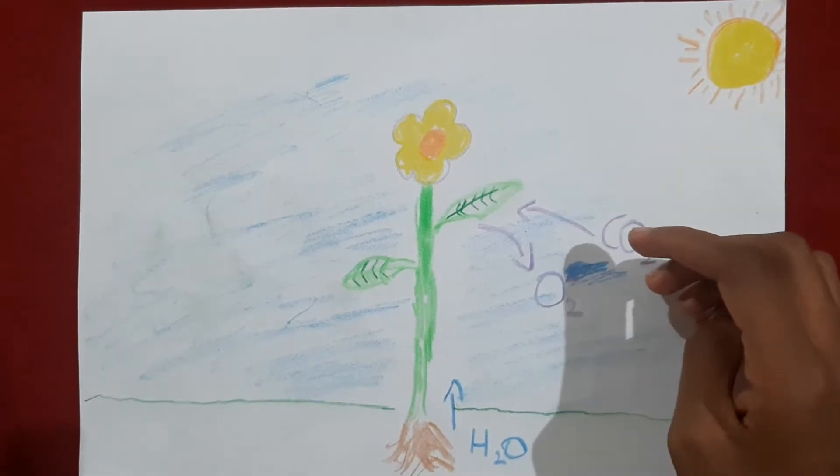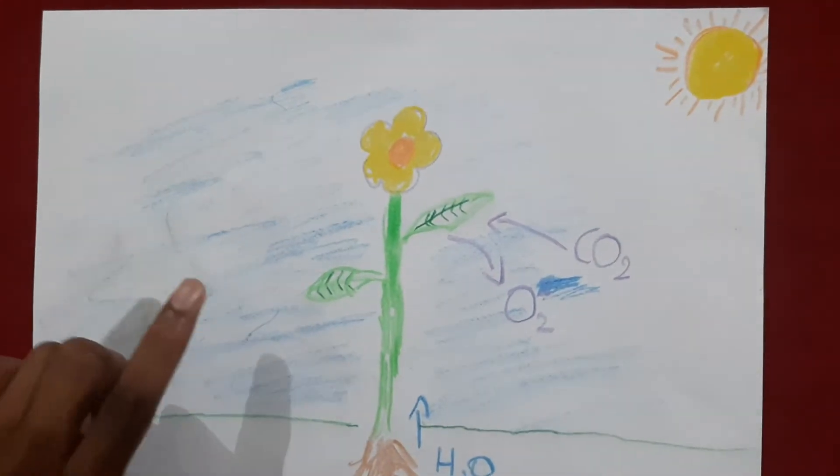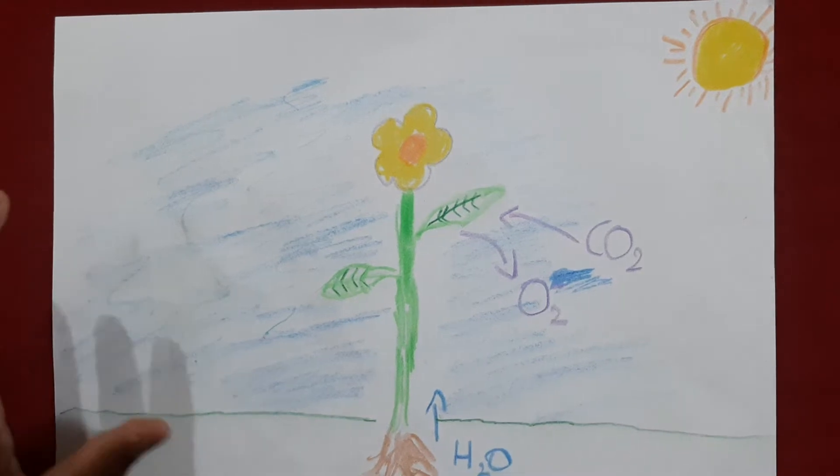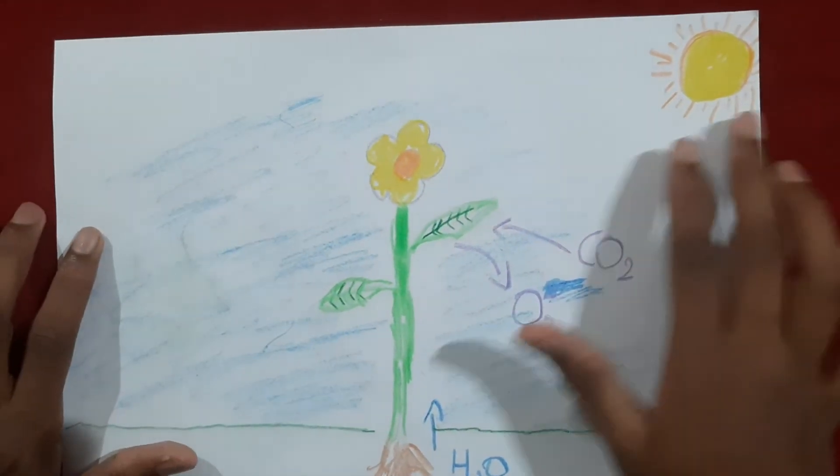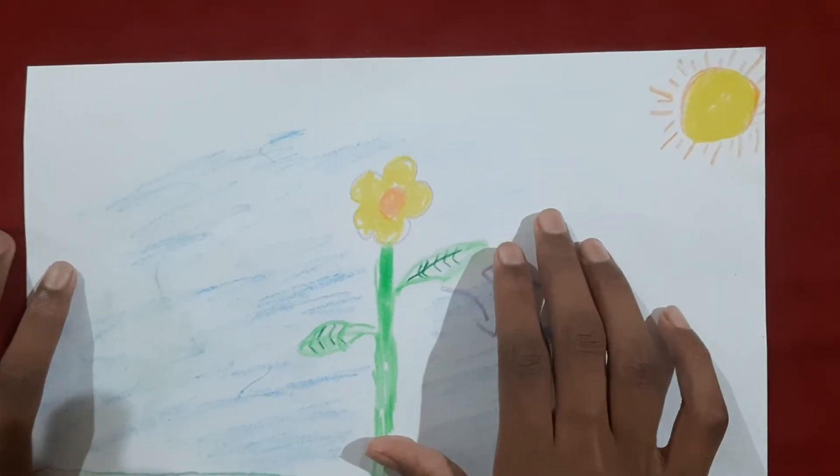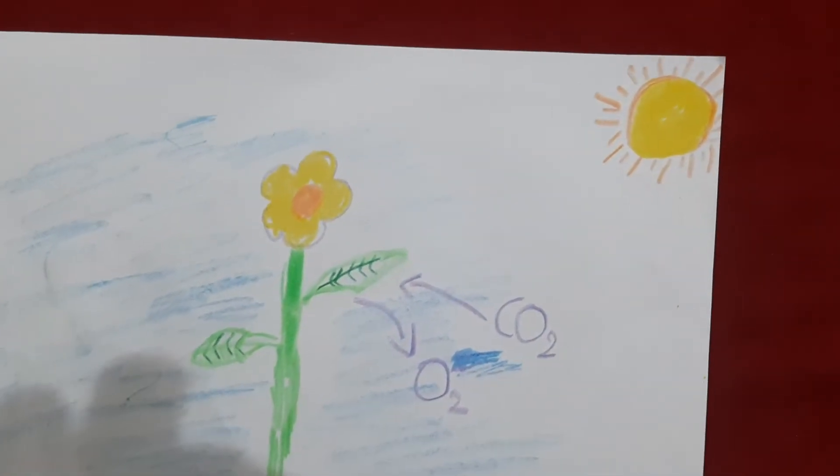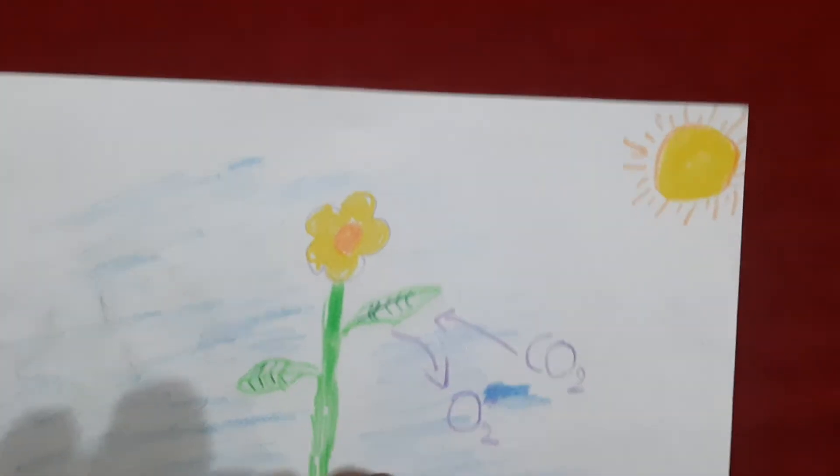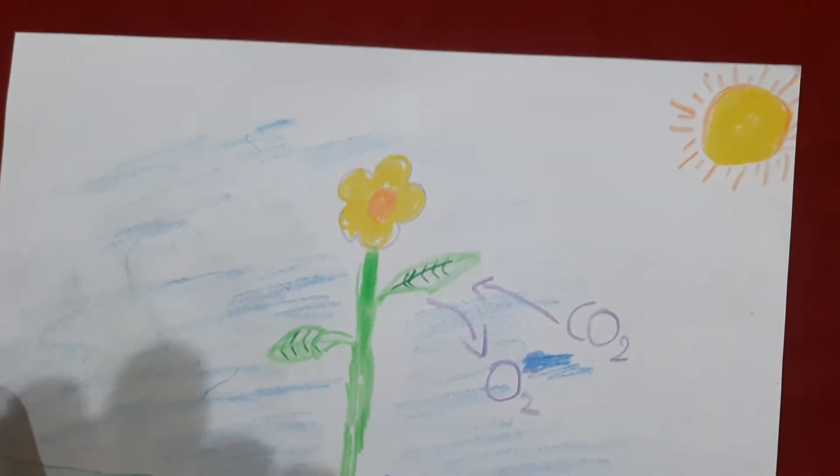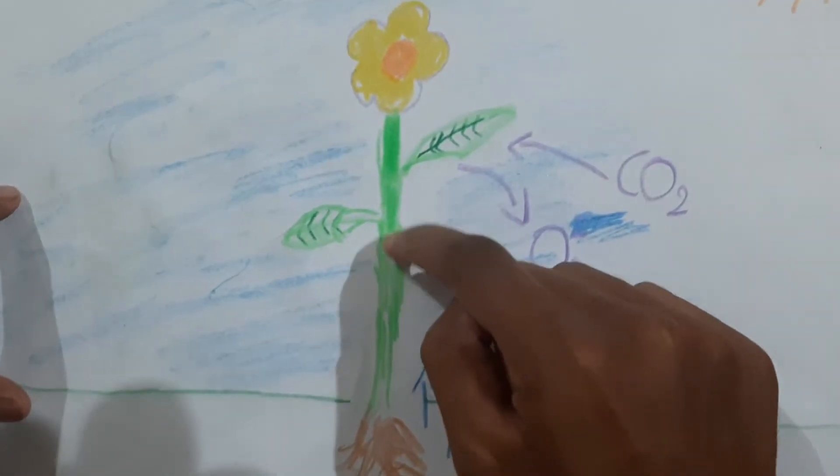makes its own food is that the plant will use the sun's rays which fall on its leaves, and it will use the water that comes up through the stem from the ground. It will be absorbed by the roots and pass up through the stem